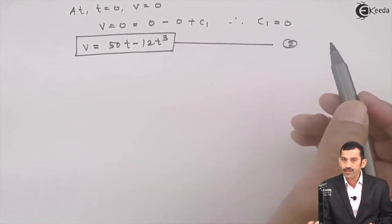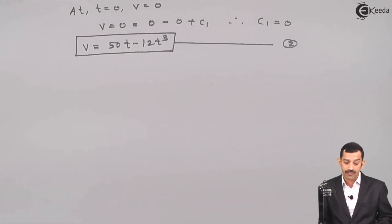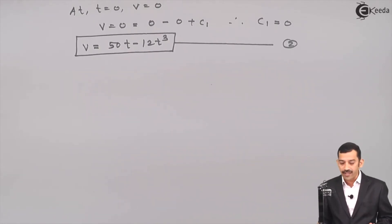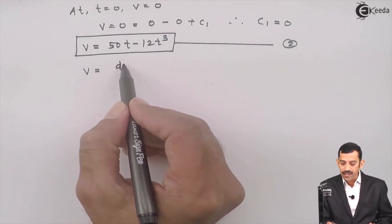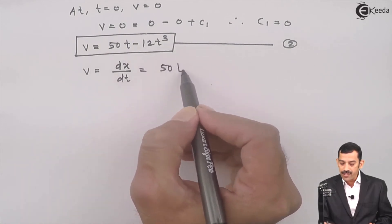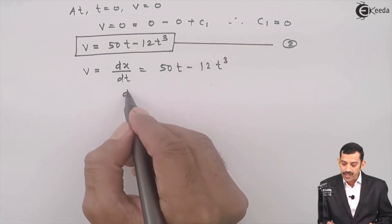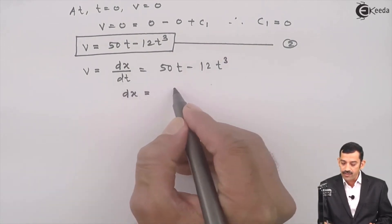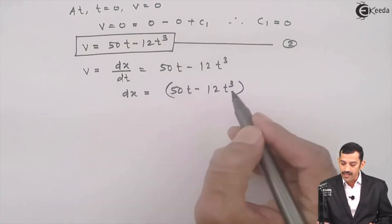We now have equation one (acceleration vs time) and equation two (velocity vs time). One more relation is needed — position x versus time t. Since v = dx/dt = 50t minus 12t³, we rearrange to get dx = (50t minus 12t³) dt.